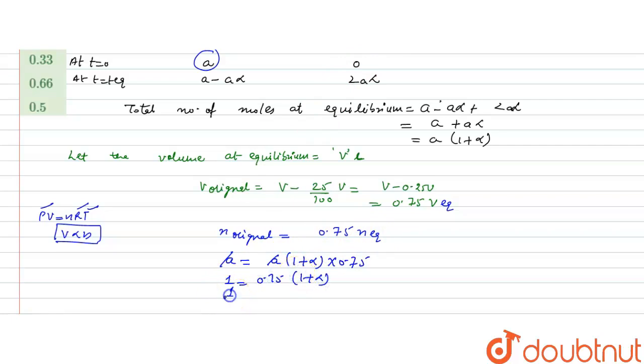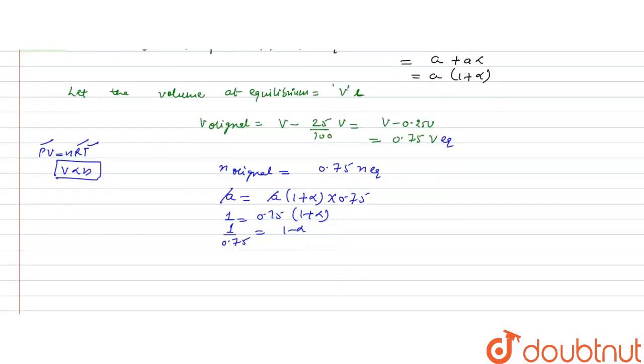This will be 1 over 0.75 equals 1 plus alpha. 1 over 0.75 becomes 100 by 75 equals 1 plus alpha. If this 1 comes here, this becomes 25 by 75. Sorry, there is plus 1 plus alpha.